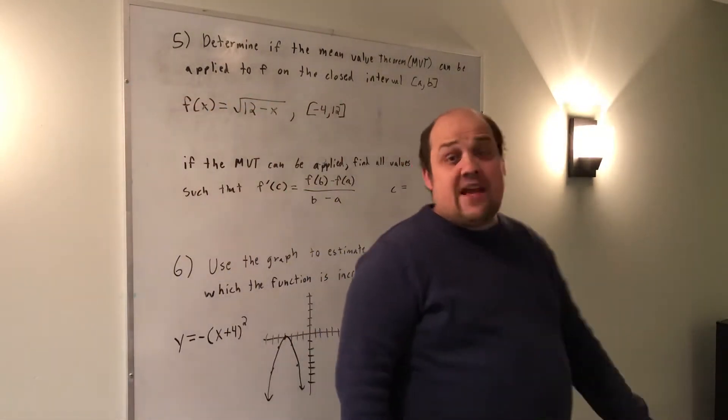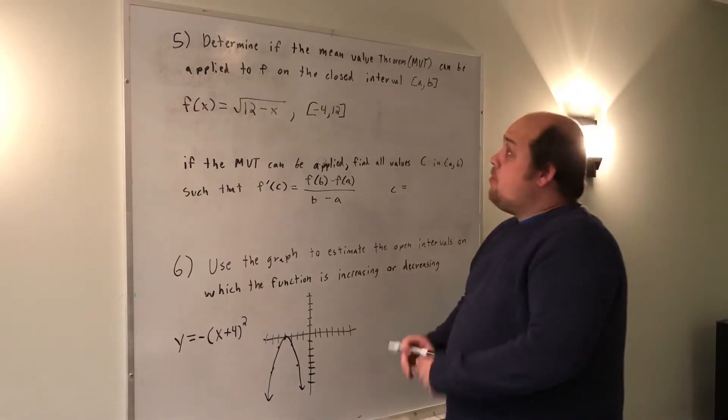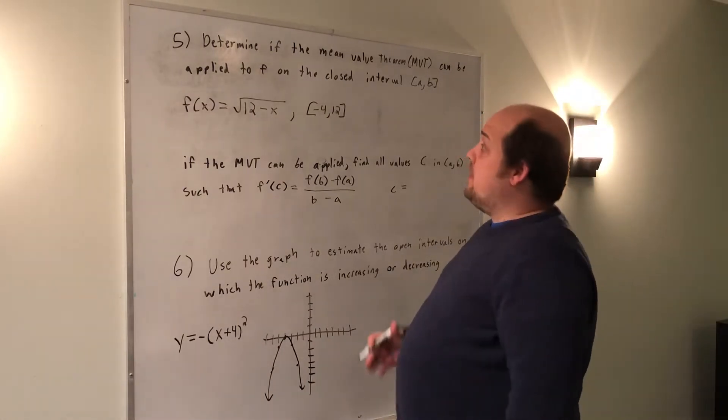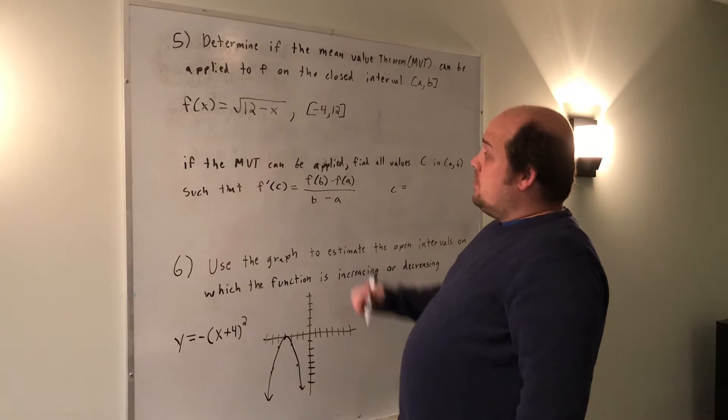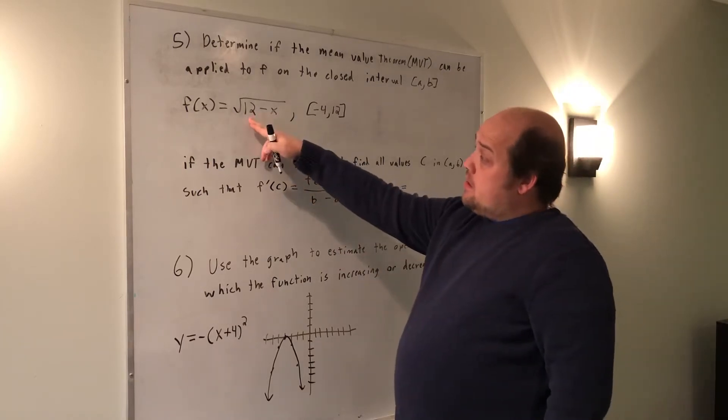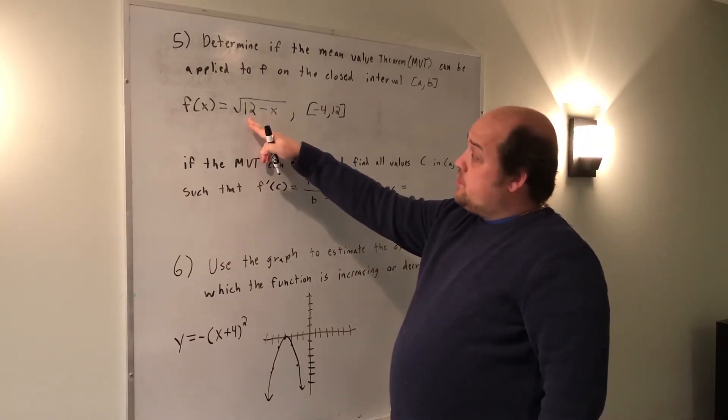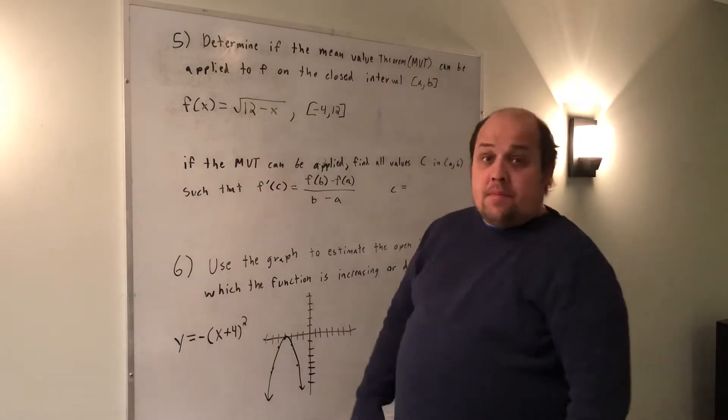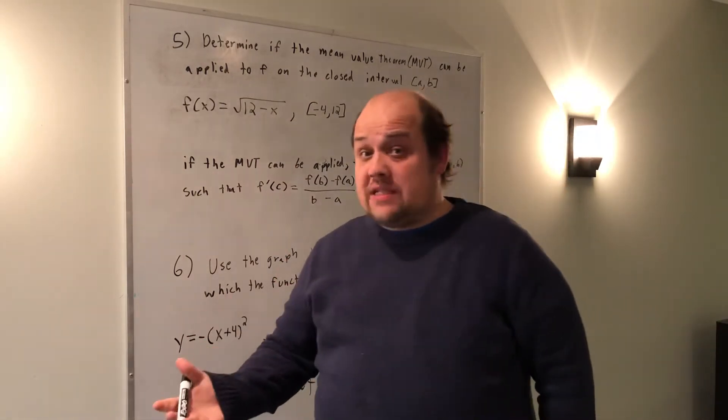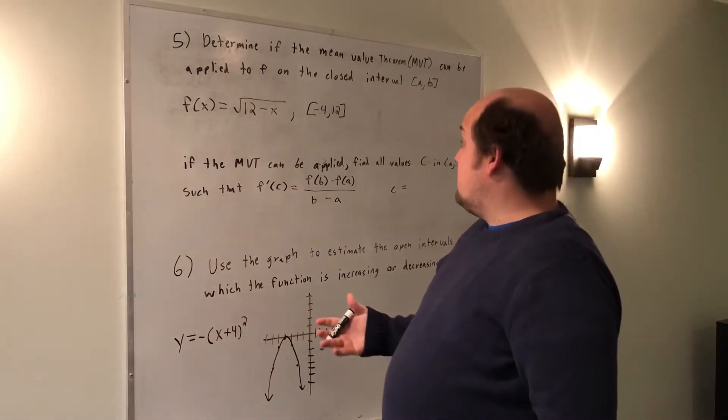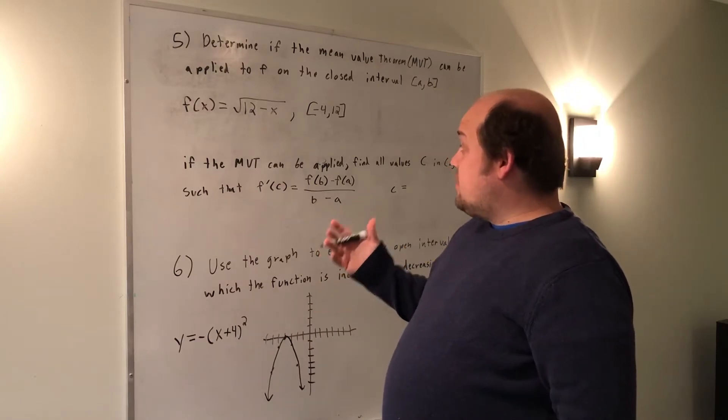Question five is a mean value theorem problem. The first thing I need to do is make sure that things are continuous on the interval. So if I look at the function f of x equals the root of 12 minus x, this is continuous everywhere where x is less than 12.